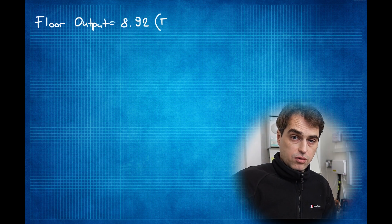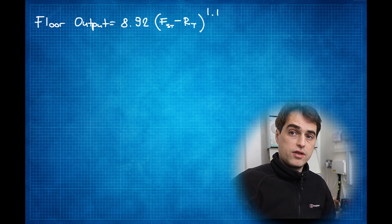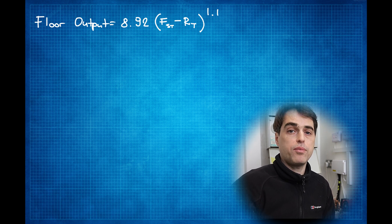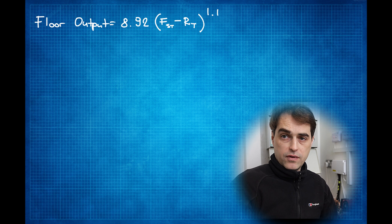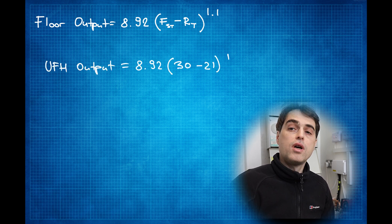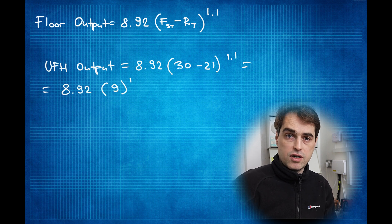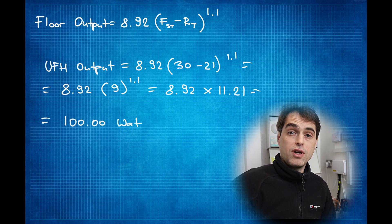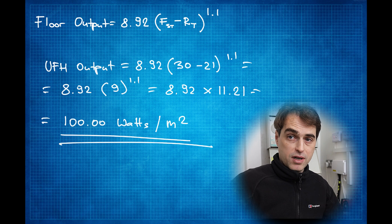If you want to know how to calculate floor output, there's an equation: floor output equals 8.92 multiplied by the difference of floor surface temperature minus room temperature, to the power of 1.1. For example, 8.92 multiplied by 30 degrees surface temperature minus 21 degrees room temperature gives 9 to the power of 1.1, which comes out at roughly 100 watts per square meter.